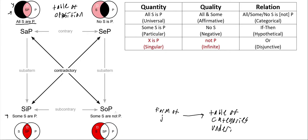Then we have 'Some S is not P.' Up here they call 'All S is P' and 'No S is P' contrary, because if all S are P it's impossible for no S to be P, and vice versa. The bottom two are subcontrary — we're looking at the same situation but focusing on different parts. If some S are P, then some S are also not P, which is what 'Some S is not P' focuses on.